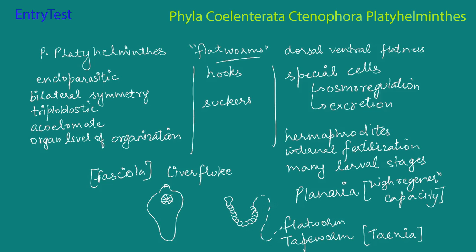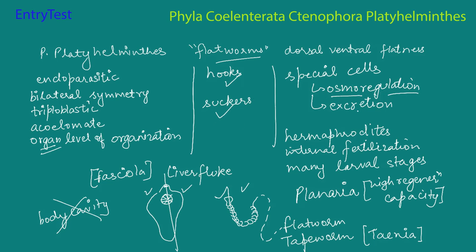Let's revise phylum Platyhelminthes. They are endoparasites living within other bodies. They have bilateral symmetry. They are triploblastic. They are acoelomate — the coelom is not present. Organization is at the organ level, not organ system. Specialized organs are hooks and suckers for nutrition. Special cells handle osmoregulation and excretion. Reproduction: hermaphroditic, internal fertilization, indirect development through many larval stages. Examples: Planaria (high regeneration capacity), Taenia (tapeworm), and Fasciola (liver fluke).